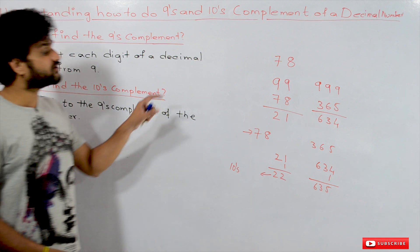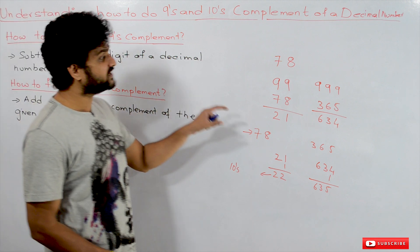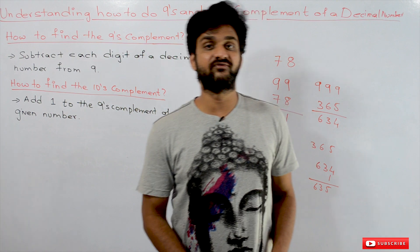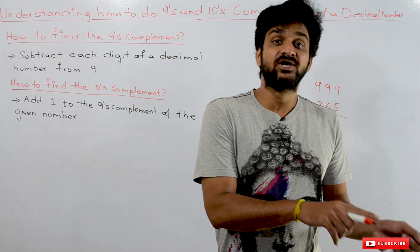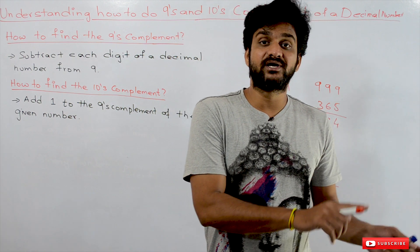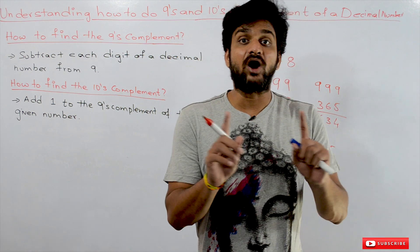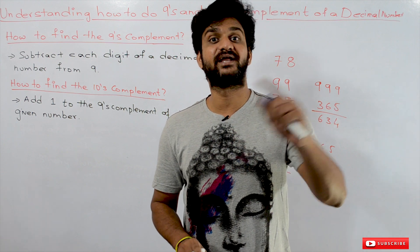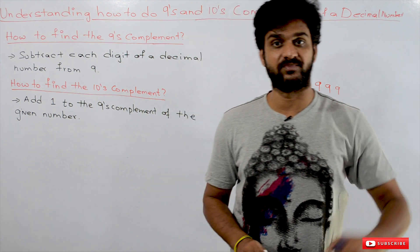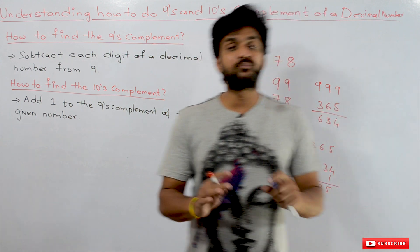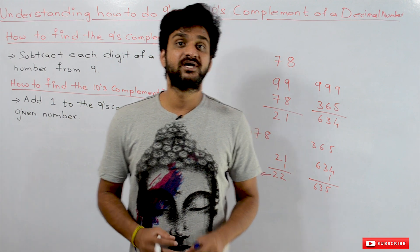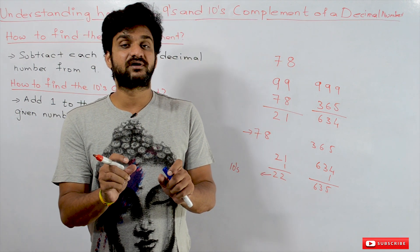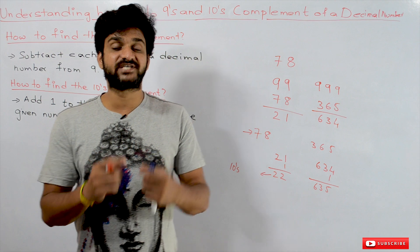So this is how we can find the 9th complement and 10th complement of a given number. In the next class we will try to understand how to subtract two decimal numbers by using the 9th complement or 10th complement. Hope you got clarity on this concept — thanks for watching.